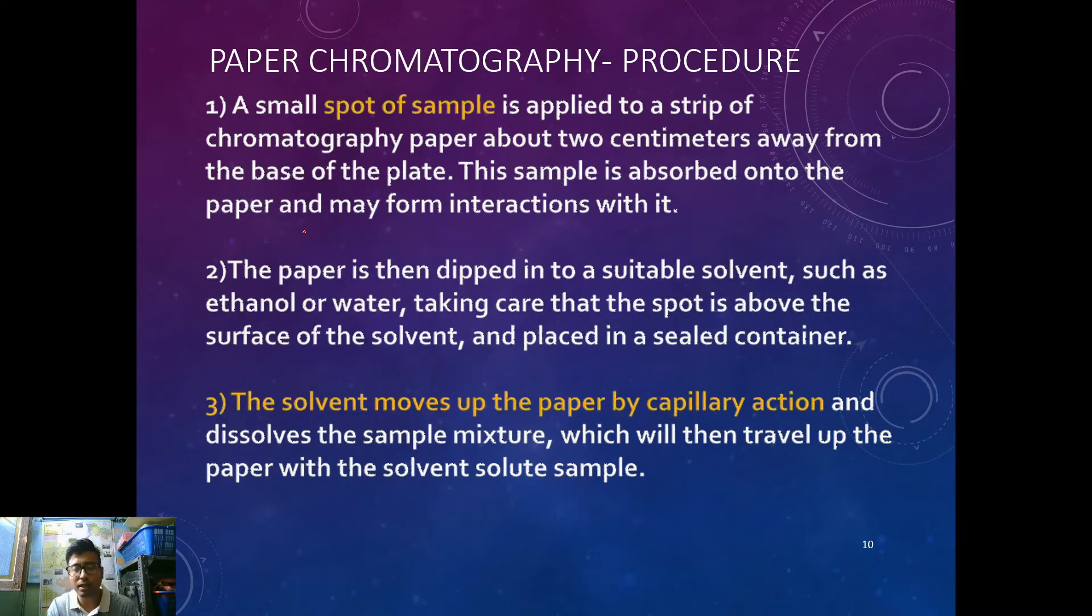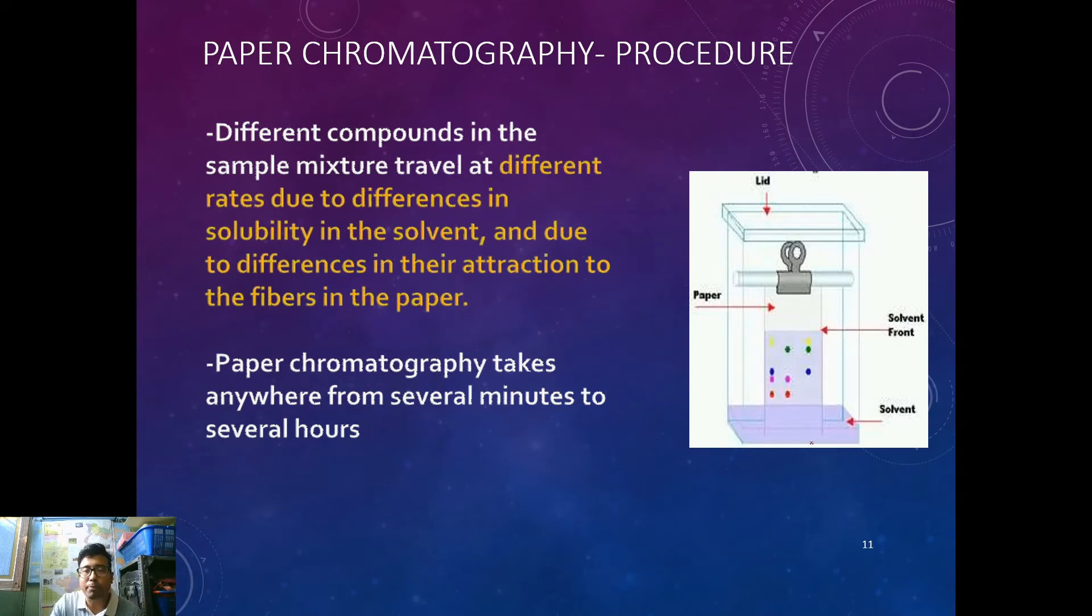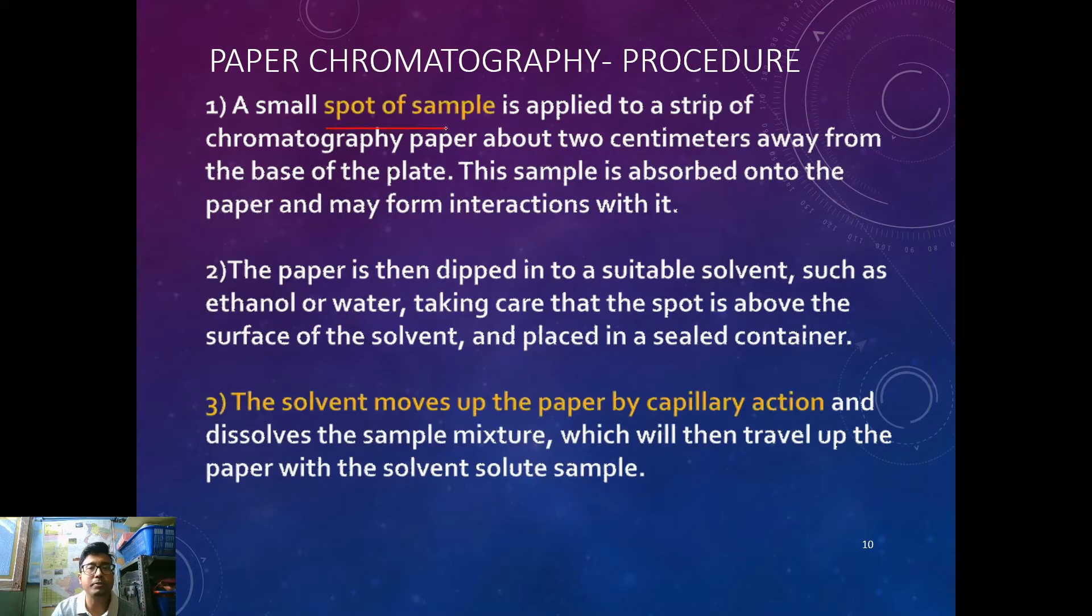Now what is the technique? What is done? A small spot of sample is applied to the strip of chromatography paper about two centimeters from the base. It will not be done absolutely at the end because the end will be put in the liquid level. We'll just apply the spot just above two centimeters from the side and then the sample is absorbed into the paper. You first need to put a spot of the mixture onto one end of the cellulose acetate paper.